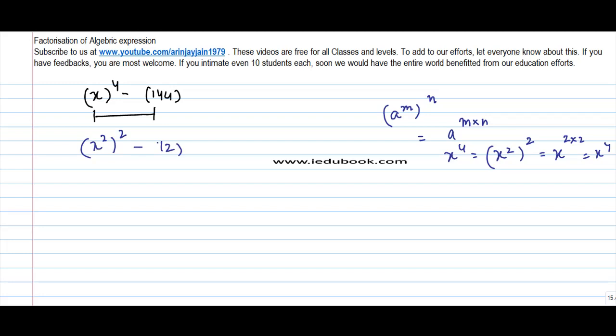Minus 144 can be written as 12 squared. So by this, my identity becomes a squared minus b squared, where a equals x squared and b equals 12. What is the factorization of this? It's a plus b times a minus b. So I can write this as x squared plus 12...